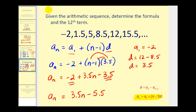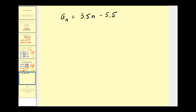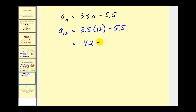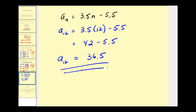One thing to notice: the coefficient of the n term equals the common difference. We were also asked to find the twelfth term, so we let n equal twelve. Using the formula: a sub twelve equals three point five times twelve minus five point five, which is forty-two minus five point five, equals thirty-six point five. So the twelfth term is thirty-six point five.